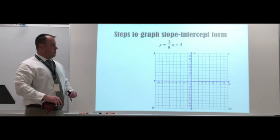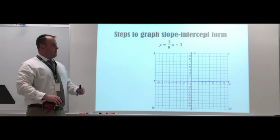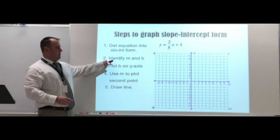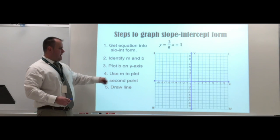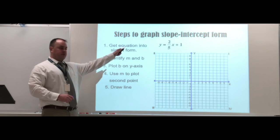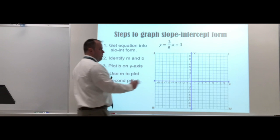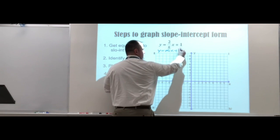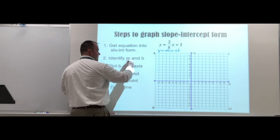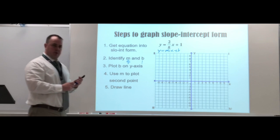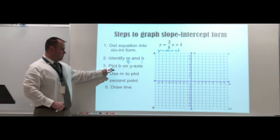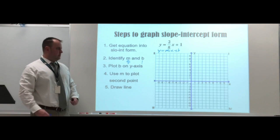Here are the steps for graphing in slope-intercept form using y = (2/5)x + 1. Step 1: get the equation in slope-intercept form. Step 2: identify m and b — our m is 2/5, our b is 1. Step 3: plot b on the y-axis — that's our starting point. Step 4: use m to plot a second point. Step 5: draw your line.